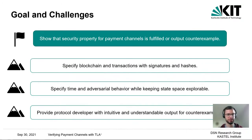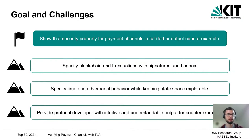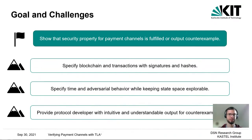There are multiple challenges. First, we need to specify the blockchain, which is the underlying layer for the off-chain protocol, and we need to specify transactions that have signatures and hashes. Then we need to specify time and how the adversary can behave. The challenge is that we need to do this in a way that the state space is still explorable and doesn't explode.